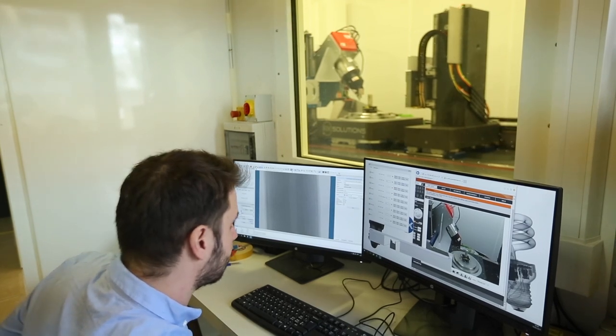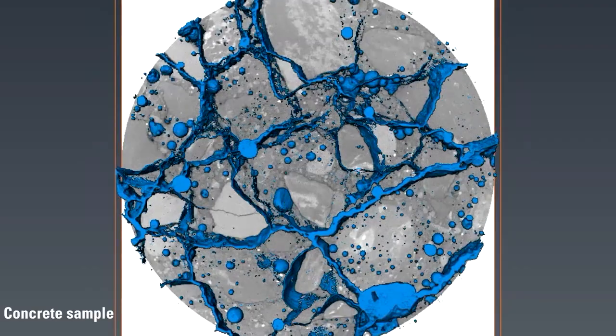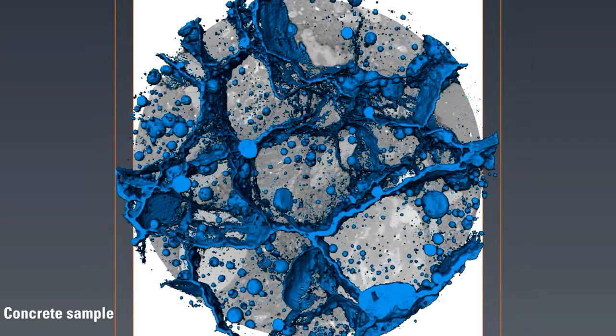We can do this in 2D, or more interestingly, assemble these slices to make a 3D analysis of the object. These parameters are very important because we know, for example, that the distribution of voids has an influence on the way concrete can get fractured or altered.